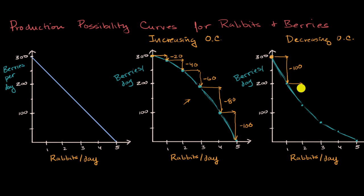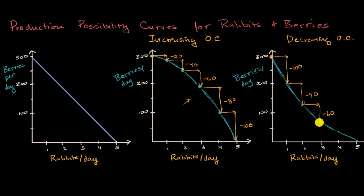For that second rabbit, my opportunity cost is 80 berries. Maybe now I've gotten the hang of it — I've already bought my rabbit-catching shoes, I've already invested in that, I'm all stretched and limber, and the rabbits like to hang out together. So the third rabbit costs me 60 berries in opportunity cost — I'm getting really good at catching rabbits. All the way to that fifth rabbit, maybe my opportunity cost is just 20 berries. So you see a clearly decreasing opportunity cost.